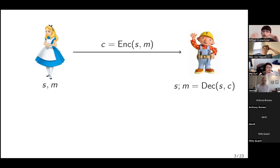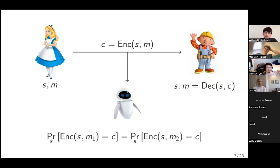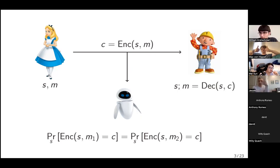As for what security property we care about, I'm going to talk about arguably the simplest and also perhaps the strongest possible notion of security, which is sometimes known as perfect secrecy. What perfect secrecy says is that for any eavesdropper who listens in on the ciphertext and does not know the secret key, the eavesdropper should gain exactly zero information by looking at the ciphertext. The formula defines this by saying that in expectation over the secret key, the probability that the ciphertext equals any two different messages m1 and m2 should be the same for all possible messages.